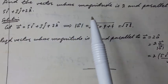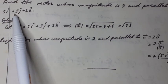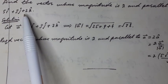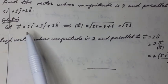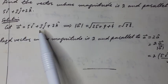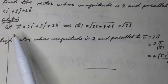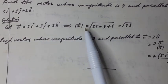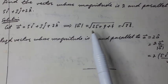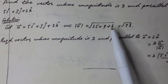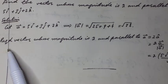Find a vector whose magnitude is 2 and parallel to the vector 5î plus 3ĵ plus 2k̂. This implies its magnitude is equal to the square root of 5² + 3² + 2², which is the square root of 25 + 9 + 4, equal to the square root of 38.